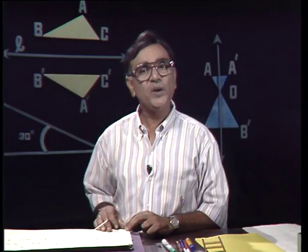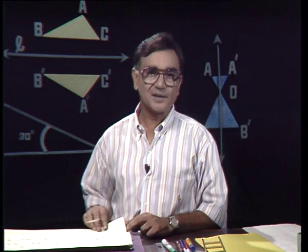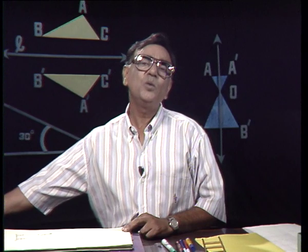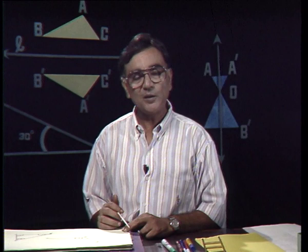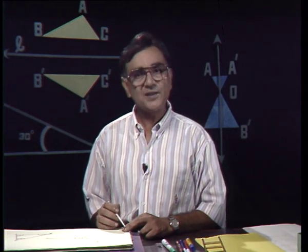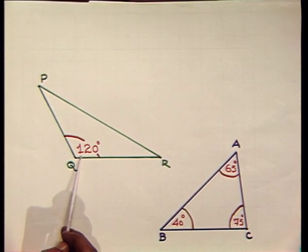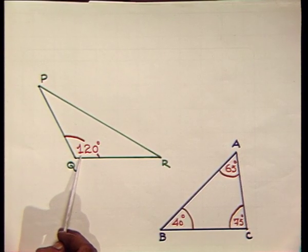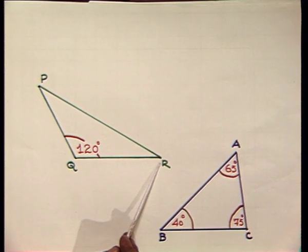This was one way of differentiating between different triangles. Can we think of another way where we can say something about the type of triangle? Look at these triangles — here in this triangle, this angle is 120 degrees, that is more than 90 degrees. So triangle PQR is an obtuse angled triangle.